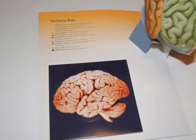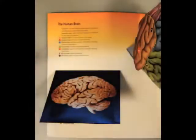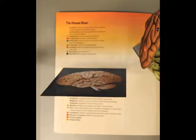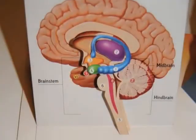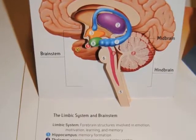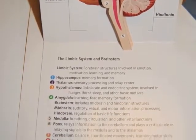A second pop-out model focuses closely on the limbic system in the brainstem, again with numbered labels to help students test their knowledge of structure and function.